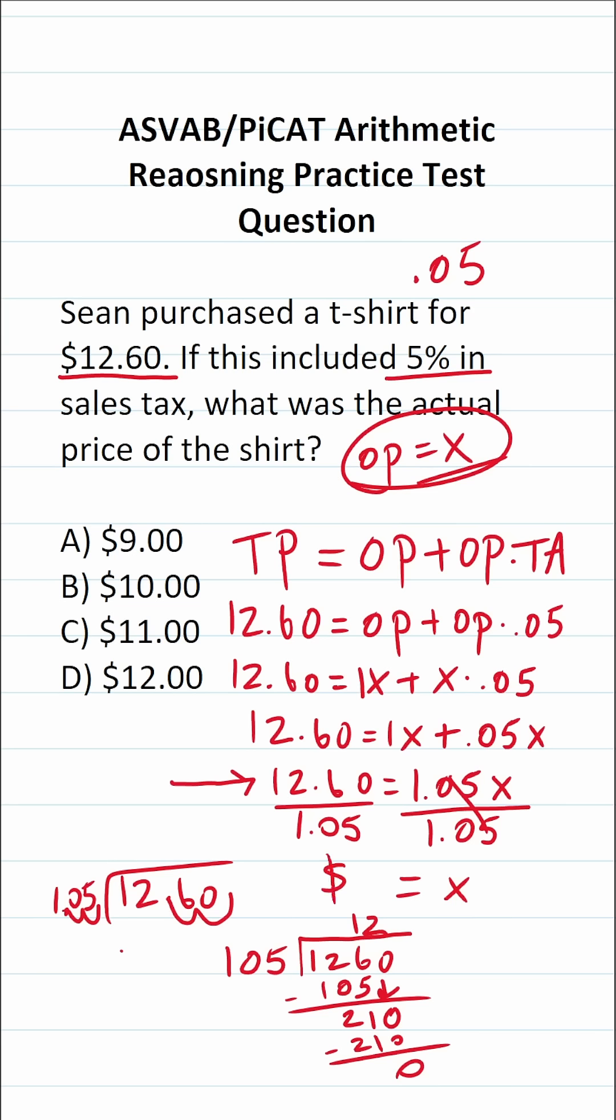So in other words, we know x is going to be 12. In other words, the original price of this shirt where sales tax is not included is D, $12.